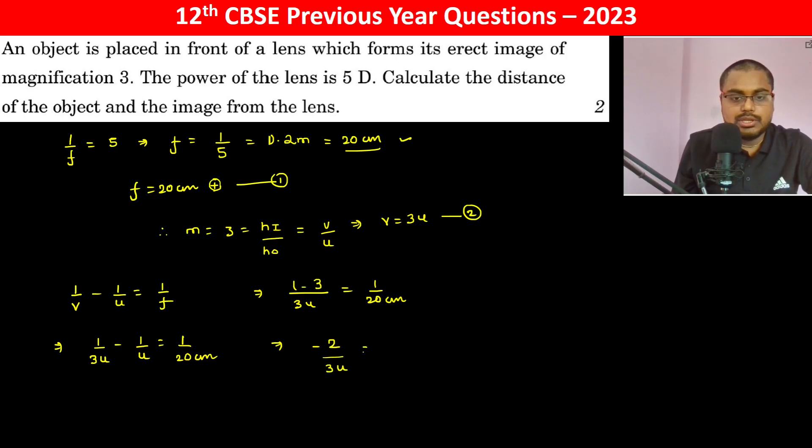Simplifying: minus 2/(3u) equals 1/20, so u becomes minus 40/3 centimeters. The distance of the object from the lens is u = -40/3 cm.